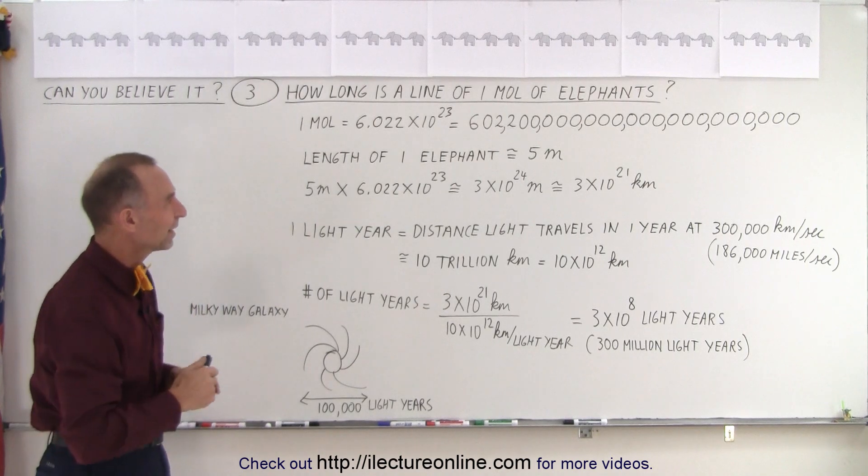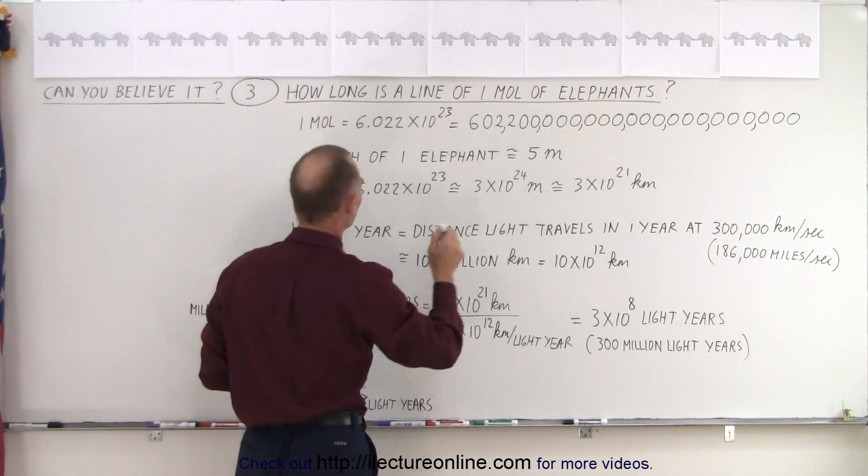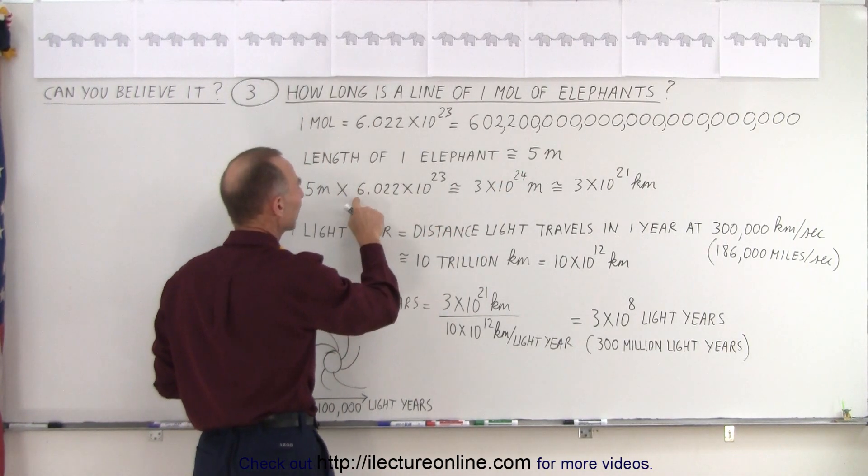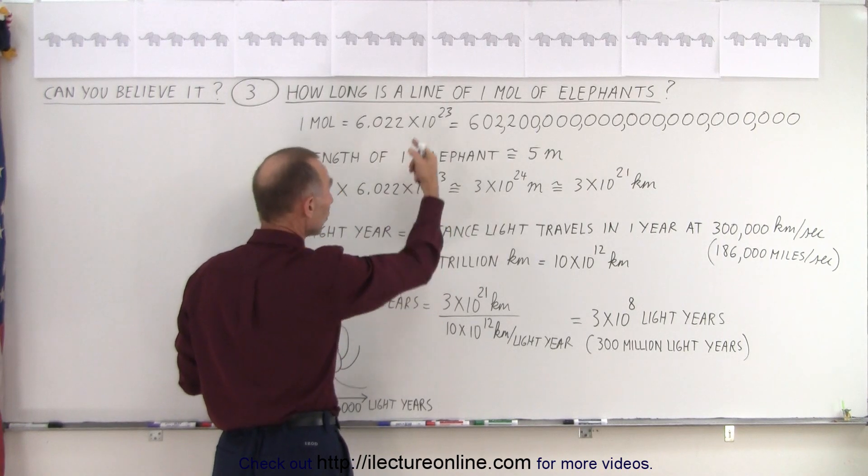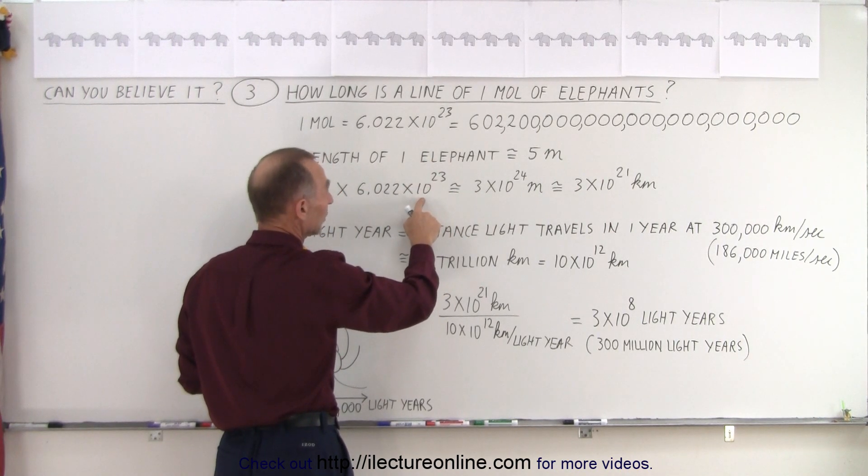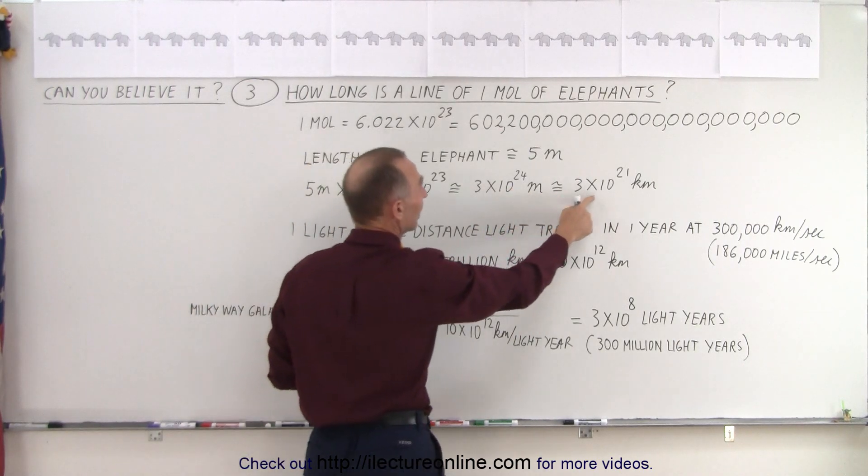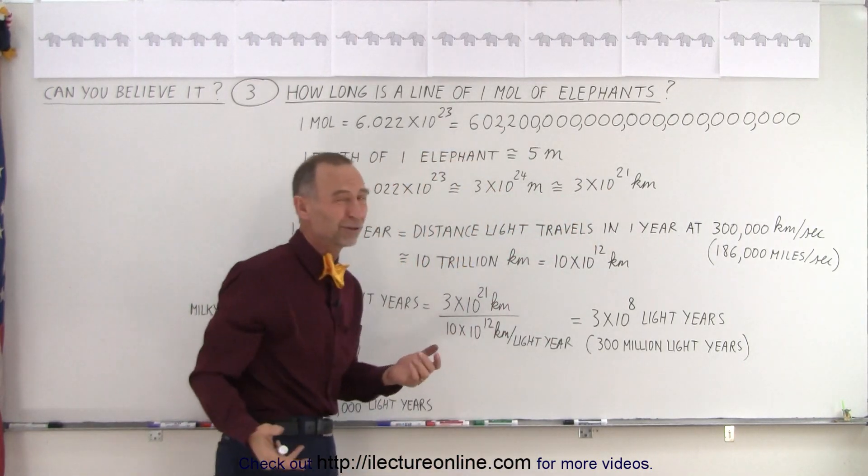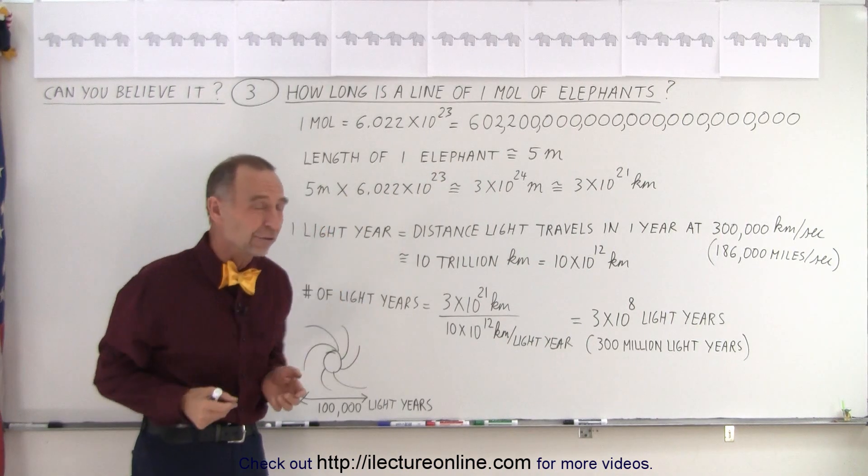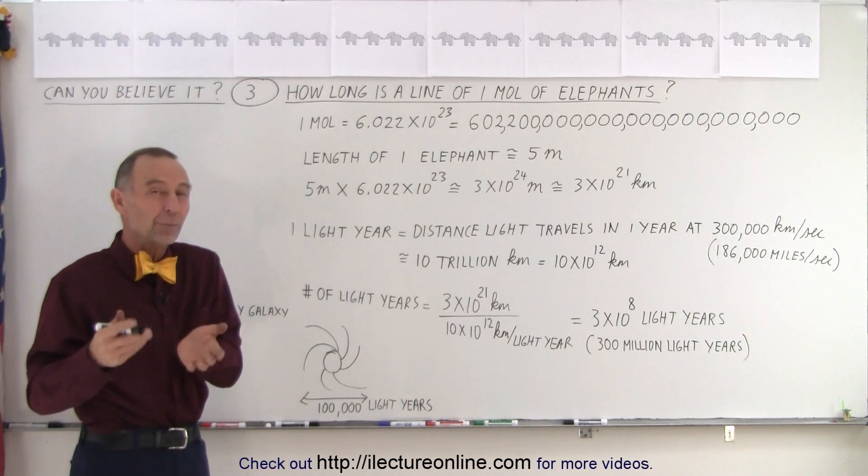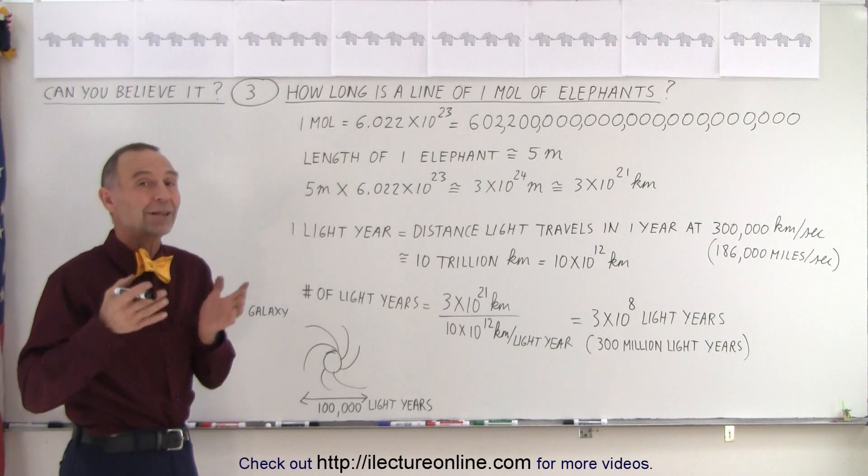Let's say that the length of an elephant is 5 meters. So we're going to multiply 5 meters by the number equivalent to a mole. We end up with 3 times 10 to the 24 meters, which is 3 times 10 to the 21 kilometers. So how big is that? When we deal with numbers that big, we like to convert that to light years.